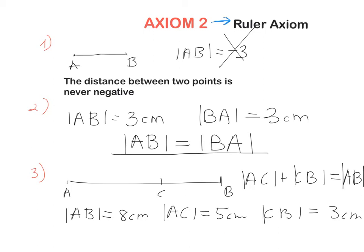To summarize the ruler axiom: first, the distance between two points is never negative — it's always positive. Second, the distance AB is the same as BA because it's exactly the same line segment. Third, when C is in the middle of AB, the distance AB equals AC plus CB.